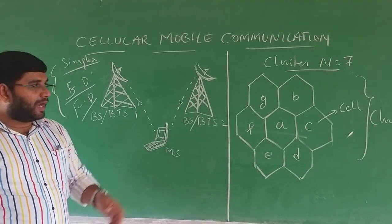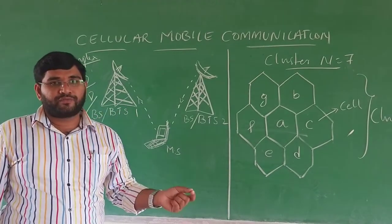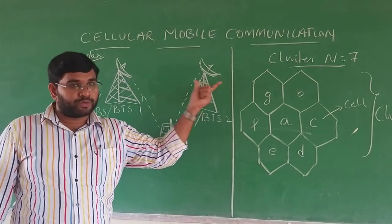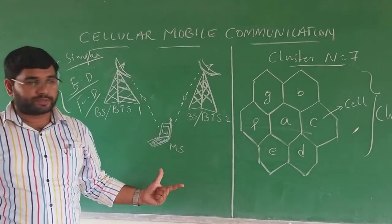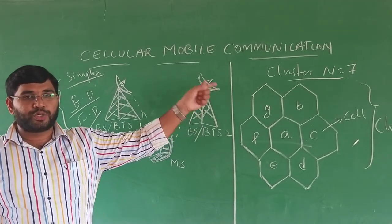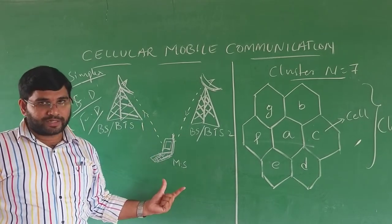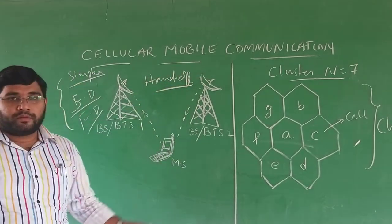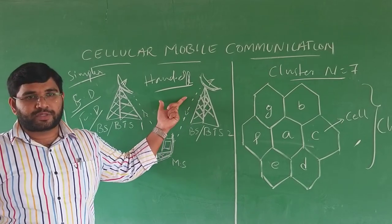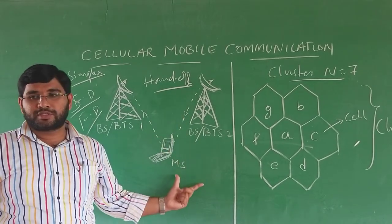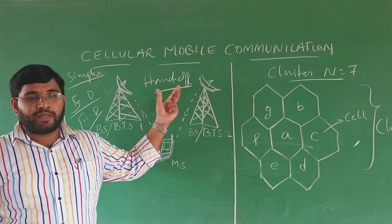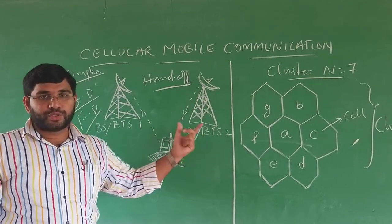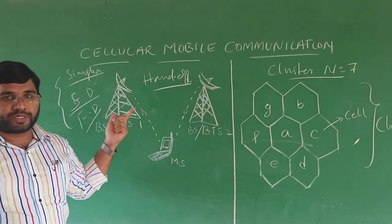The transfer of information from one BTS station to another BTS station — that is, from one cell to another cell — is the main concept of the cellular system. The main point here is the handoff process. Without the handoff process we cannot use cellular mobile communication. Handoff is nothing but handing over the information of a particular mobile station from one BTS station to another BTS station.